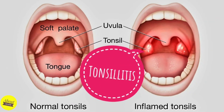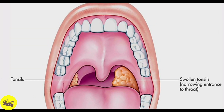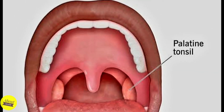Tonsillitis is the inflammation of the tonsils, two oval-shaped pads of tissue at the back of the throat. Most cases of tonsillitis are caused by infection with a common virus, but bacterial infections also cause tonsillitis. The tonsils act as filters, trapping germs that could otherwise enter your airways and cause infection. They are responsible for making antibodies to fight infection.